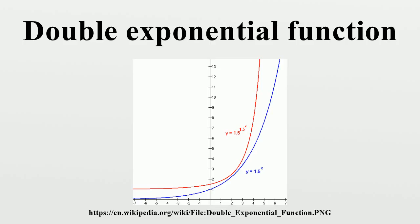Applications: Algorithmic complexity. In computational complexity theory, some algorithms take doubly exponential time. Each decision procedure for Presburger arithmetic provably requires at least doubly exponential time.